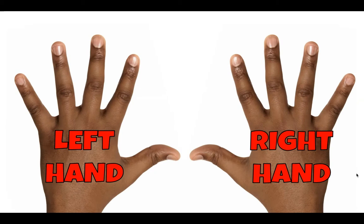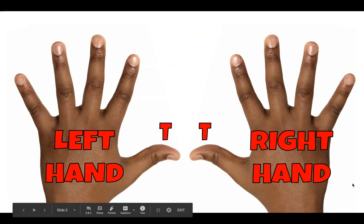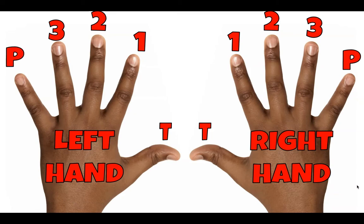We'll start by reviewing our left and right hand fingers and where we place them. On both hands we label our fingers T, thumb, and then one, two, three, and pinky. So take a moment to review thumb, one, two, three, pinky on both hands.